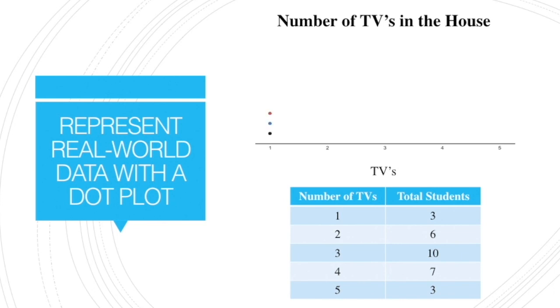Since we had three students, we're going to put three dots above one TV. So three students answered and said, I have one TV. When I represent this, I have one TV and a total of three observations, one for each student.